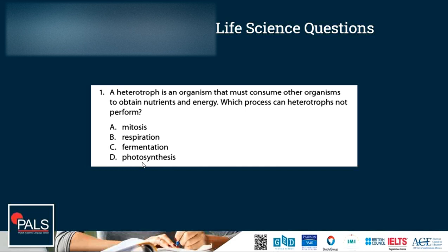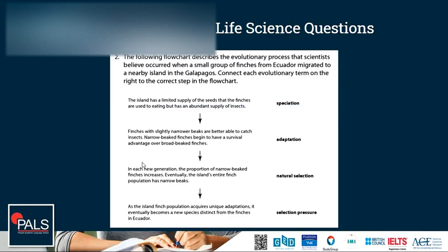Question two. The following flowchart describes the evolutionary processes that scientists believe occurred when a small group of finches from Ecuador migrated to a nearby island in the Galapagos. Connect each evolutionary term on the right to the correct step in the flowchart. This requires assumed knowledge on evolution and the processes that lead to speciation — the formation of new species. We have a typical list of steps that lead to the formation of a new species.